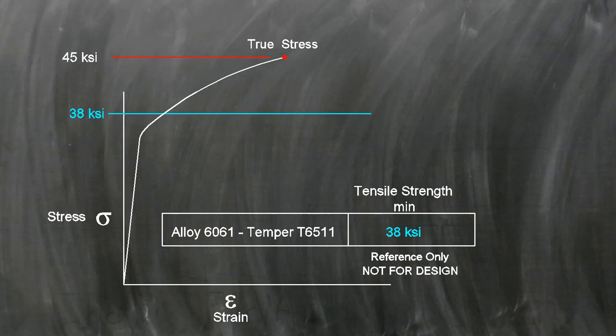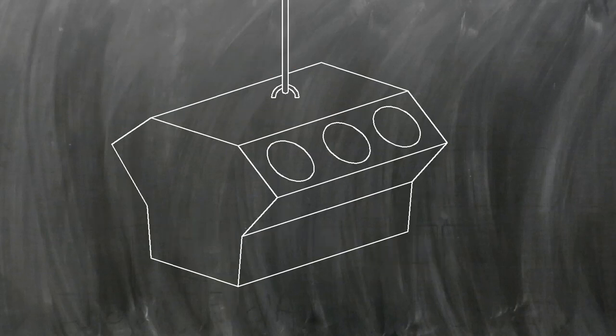Now it looks like our part is a lot stronger than the minimum. It looks like our part could hold 45 KSI, but nothing could be further from the truth.